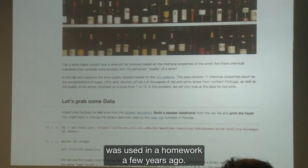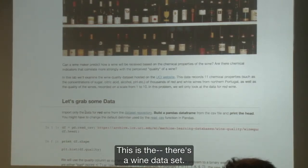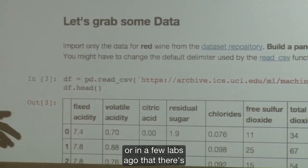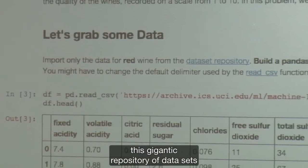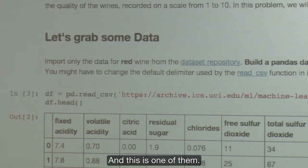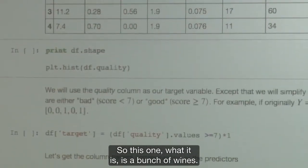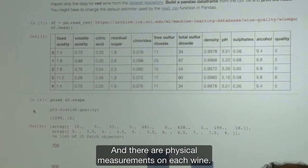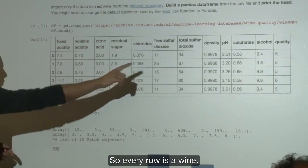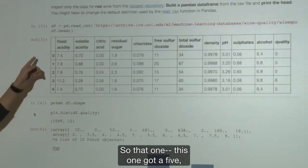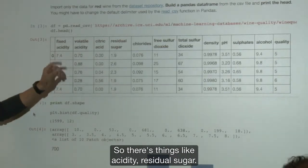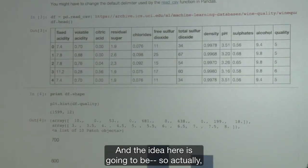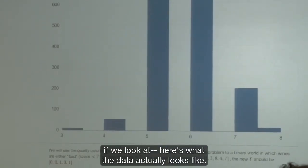So the data we'll be working with was used in a homework a few years ago. This is the wine data set. There's this gigantic repository of data sets provided by UC Irvine, and this is one of them. It's a bunch of wines. There's a total of 1,600 wines. Here's what the data actually looks like.